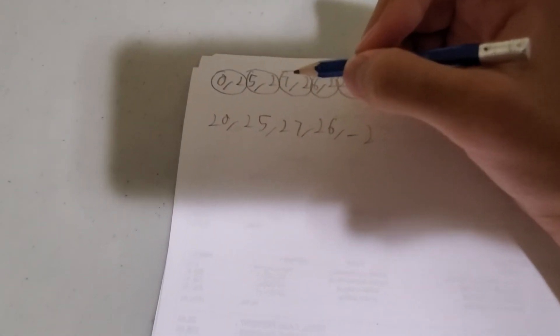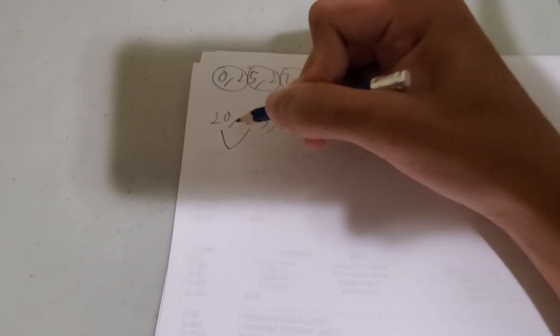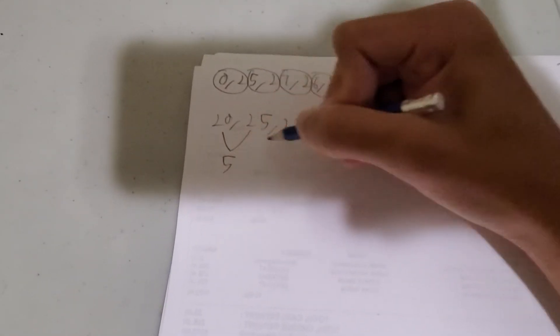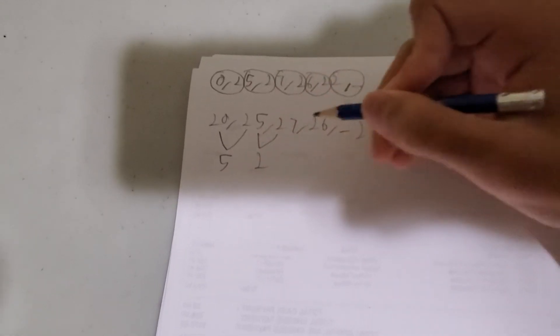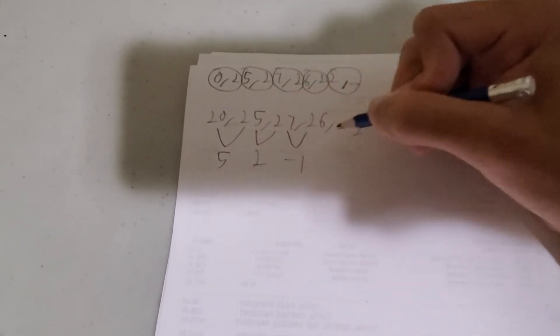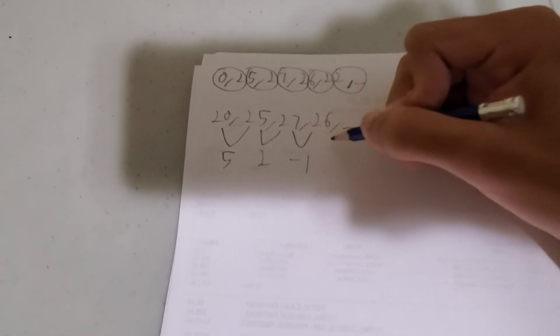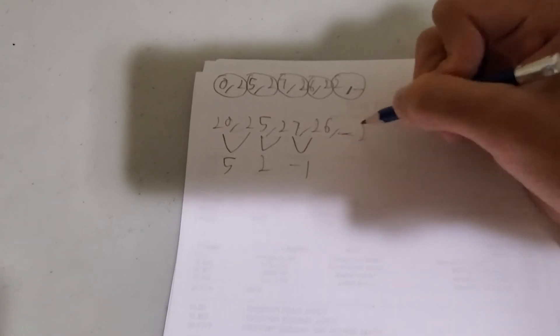So let's do the first differences. The first differences are 5, the first difference is 2, because 25 plus 2 is 27, 27 minus 1 is 26, and something 2.